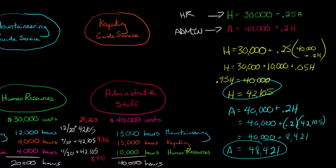Now, you might be thinking, we're allocating $42,105 in costs of HR, but HR only had 30,000. But remember, this 30,000 is pre-allocation. So this number is going to be higher than the pre-allocation amount because we're taking into consideration the HR and administrative staff, they are providing services to one another.